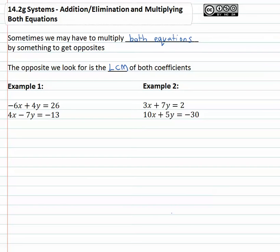So for example, if I look at example one, -6x + 4y = 26 and 4x - 7y = -13. If I look at the x's, we can't multiply four by something to get six. Looking at the y's, we can't multiply the four by something to get seven, at least not easily. So basically, we can just pick one of the variables and we're going to force ourselves to get opposites.